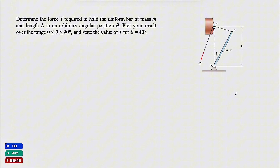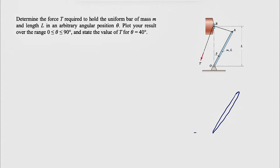We're going to solve this using equilibrium conditions. First, we'll draw the free body diagram for bar AO. We have a pin at point O, which means we have two components - one horizontal and one vertical - we can call them Rx and Ry.